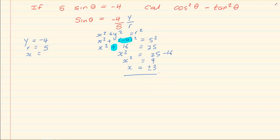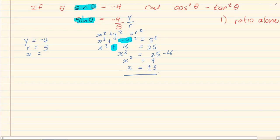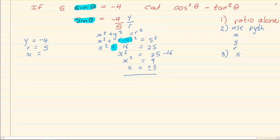When doing these ratios, number one, you must get your ratio alone — as I did by getting sin theta equals minus 4 over 5. The second step is to use Pythagoras to determine x, y, and r, which is really the heart of all this work. The last thing before substitution is to look at your signs and your restrictions.